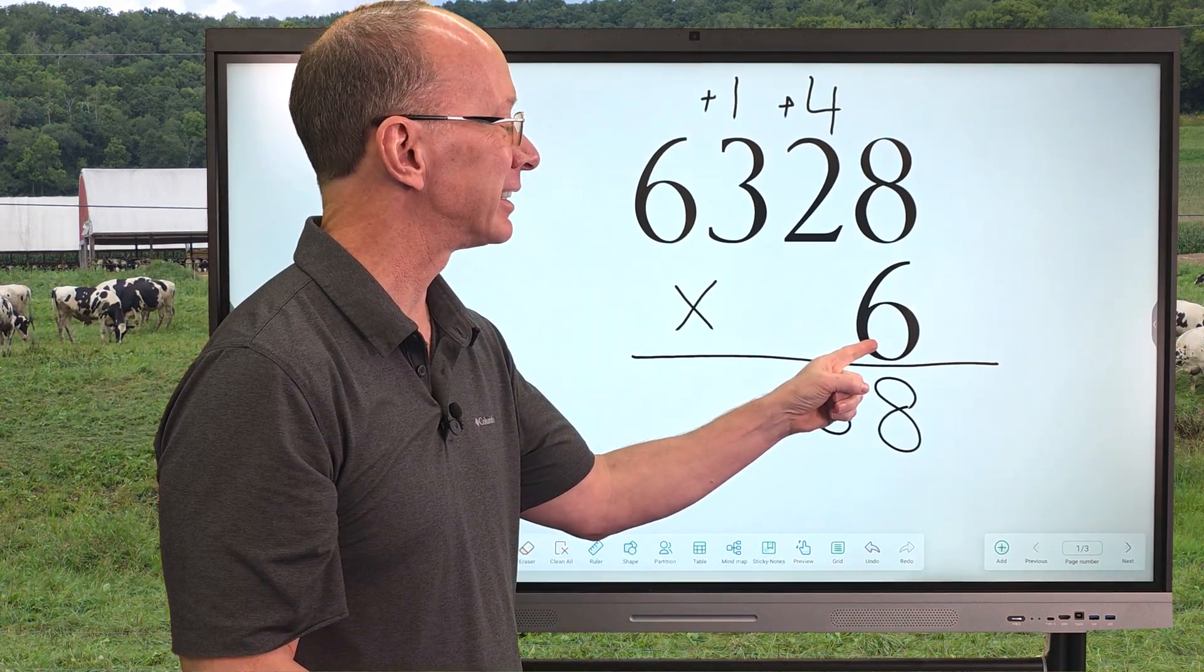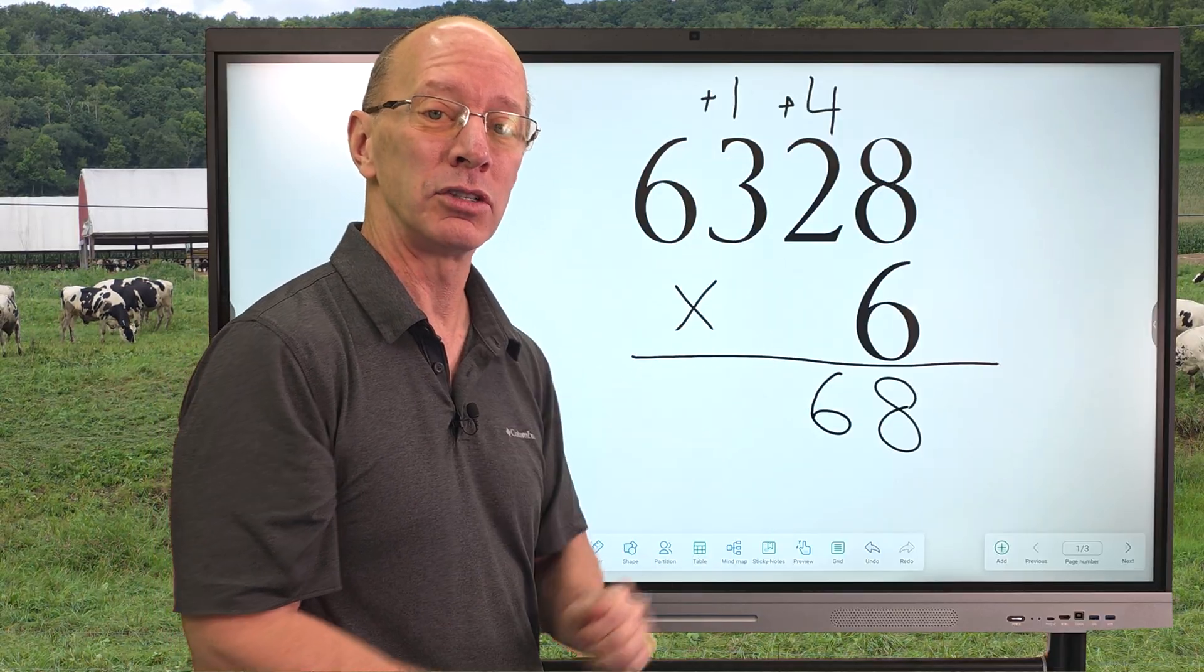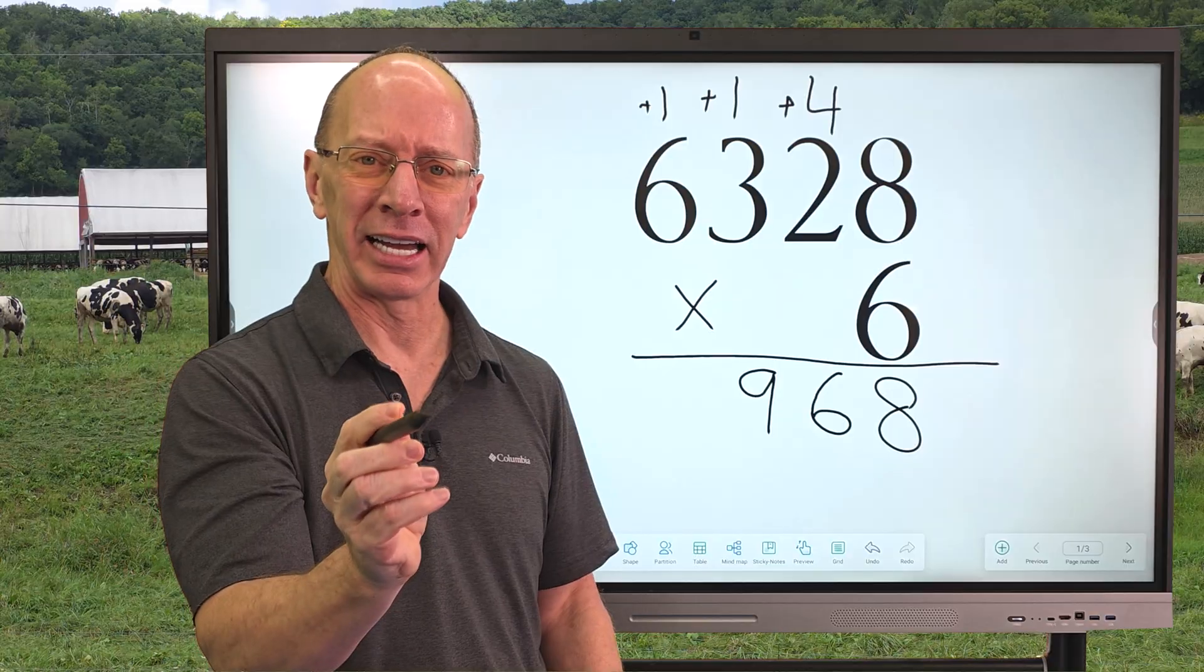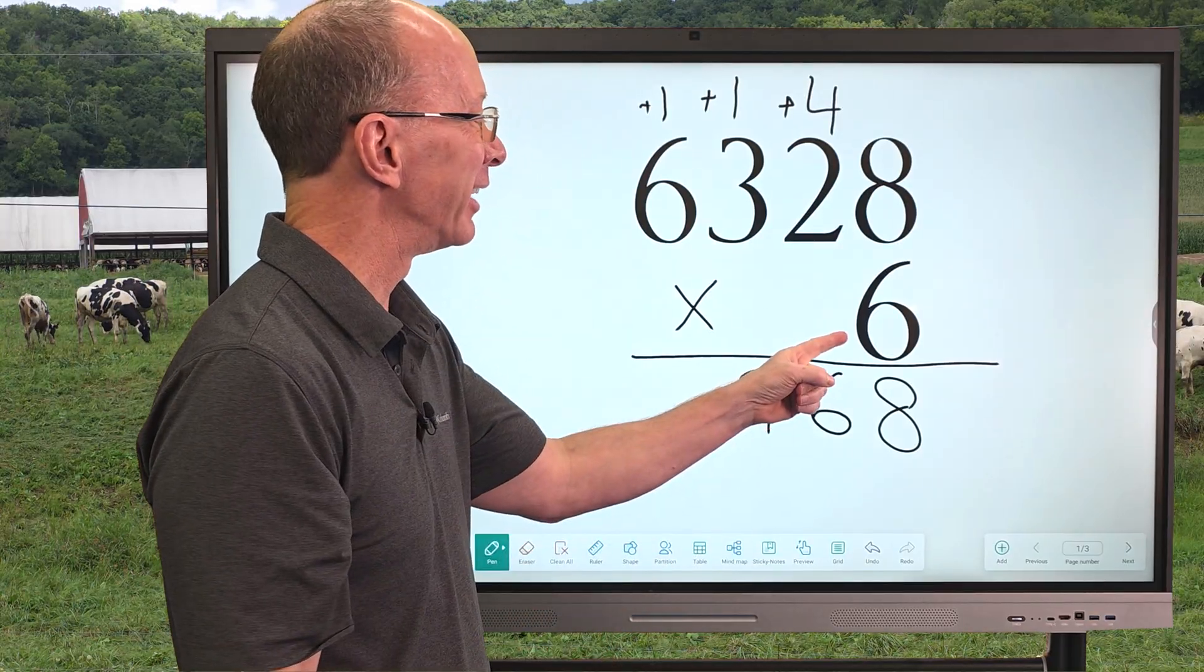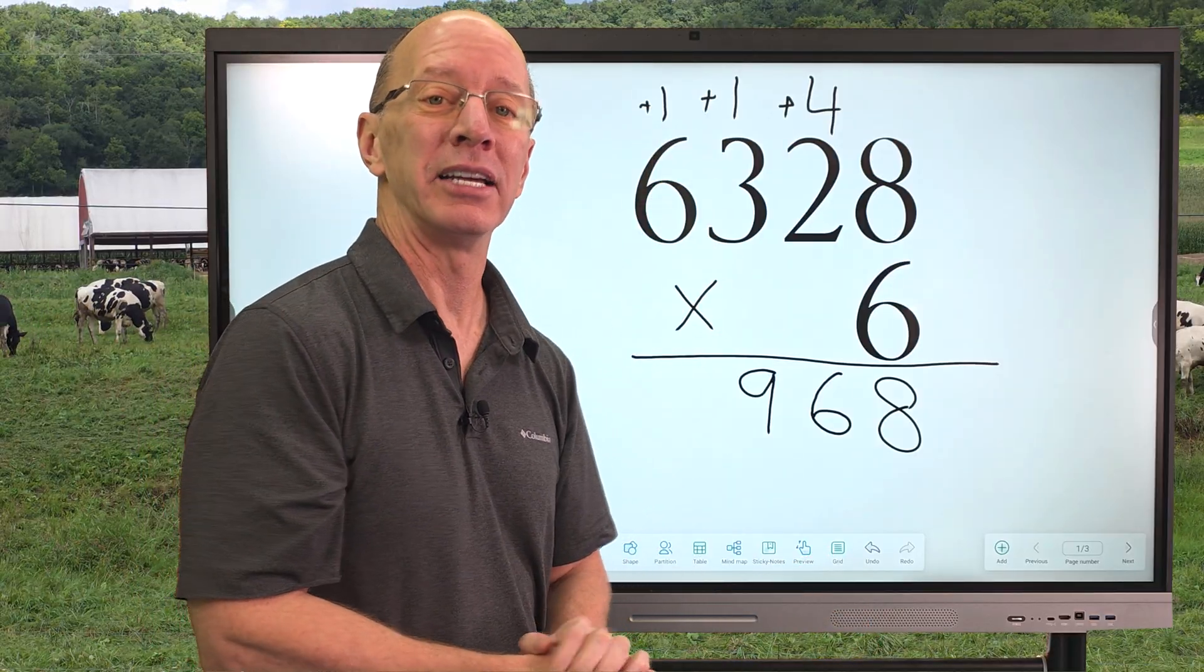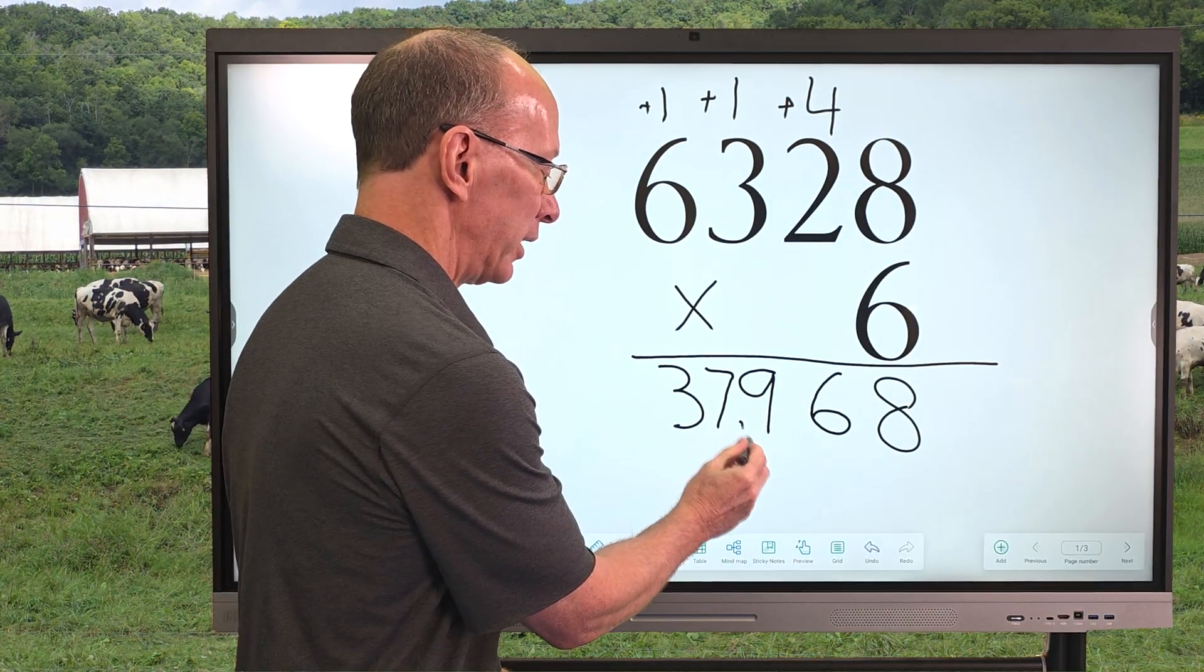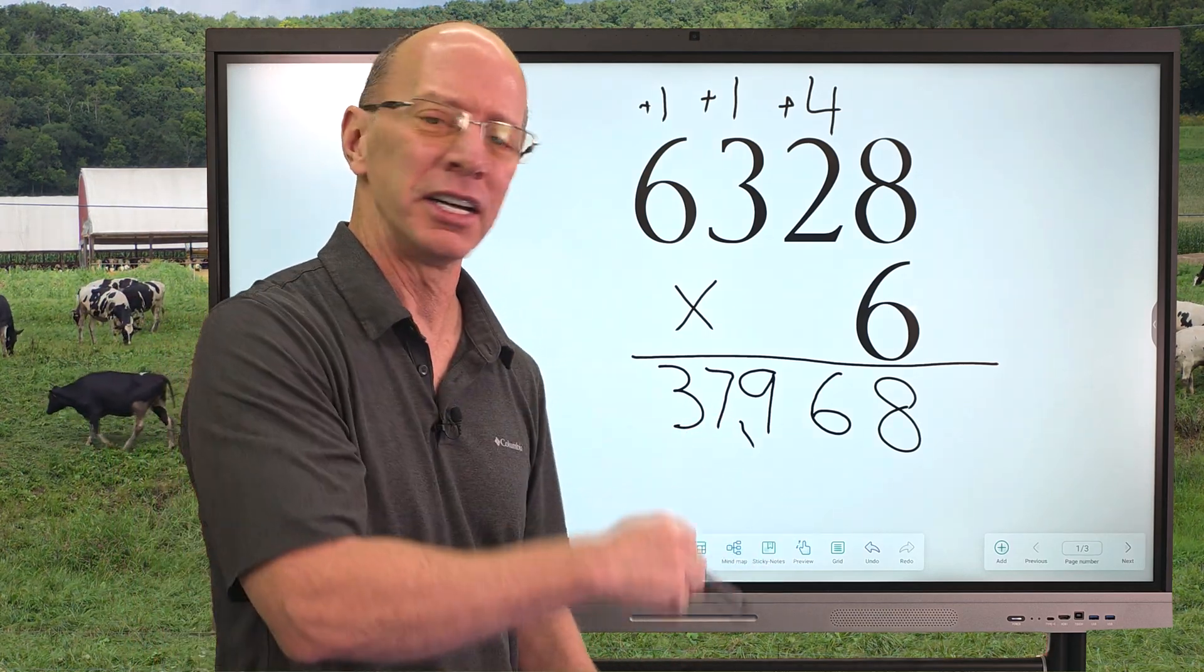Now I'm going to go ahead and take 6 times 3 is 18. Now we're going to add that 1 which would be 19. So, I go ahead and put 9 right there and then I put the 1 up here. Now I'm going to take 6 times 6 is 36 plus that 1 which would be 37. So, I'm going to put 37 right here and that is our answer, 37,968. Ready to try another one?